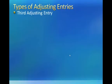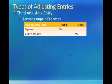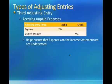The third adjusting entry accrues unpaid expenses. This entry is necessary when an expense has been incurred, but the company has yet to fulfill their commitment related to this expense. Often this unfulfilled commitment represents a liability, i.e. accrued interest on a loan, but it could also involve an equity account, i.e. restricted stock or stock options. This entry therefore involves a debit to an expense account and a credit to either a liability account or an equity account. Recording this type of adjusting entry helps ensure that expenses recorded on the income statement are not understated. Failure to make this adjusting entry will thus overstate net income.